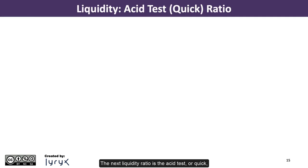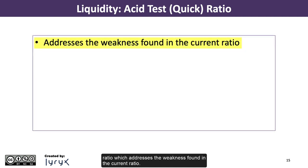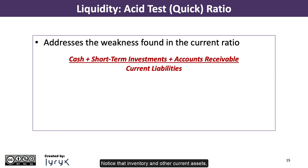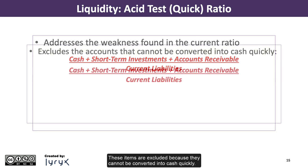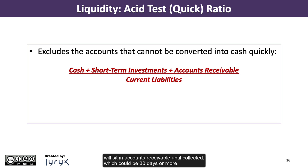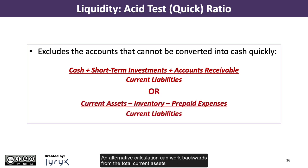The next liquidity ratio is the acid test, or quick, ratio, which addresses the weakness found in the current ratio. The quick ratio is calculated as cash plus short-term investments plus accounts receivable, divided by current liabilities. Inventory and other current assets such as prepaid expenses are excluded because they cannot be converted into cash quickly. Inventory must be sold, and if sold on account, will sit in accounts receivable until collected — which could be 30 days or more. An alternative calculation works backwards from total current assets, deducting inventory and prepaid assets, then dividing by current liabilities.